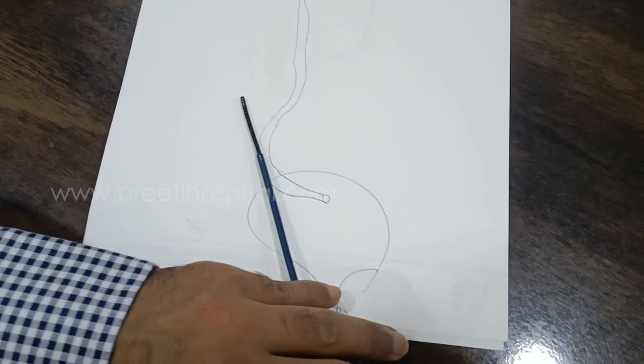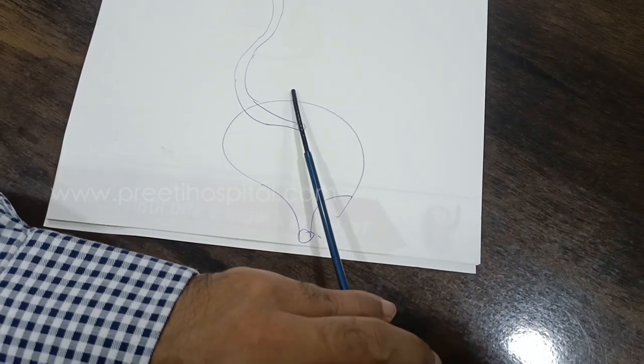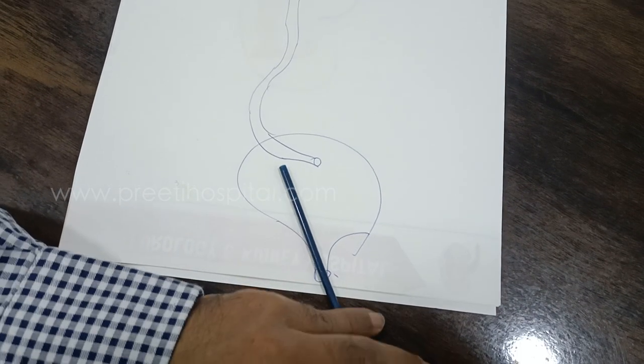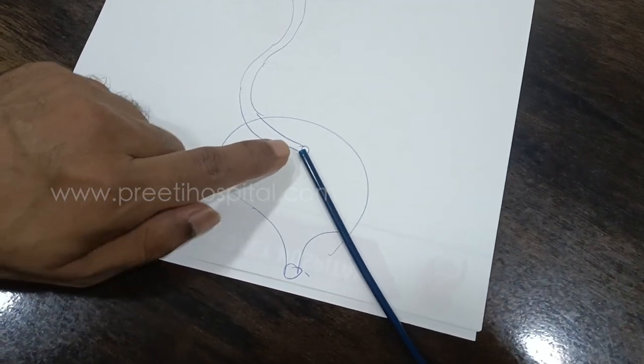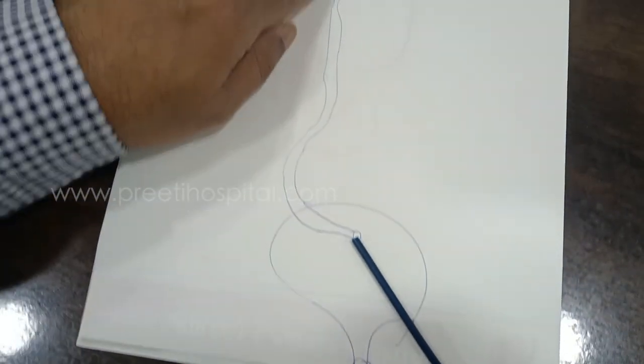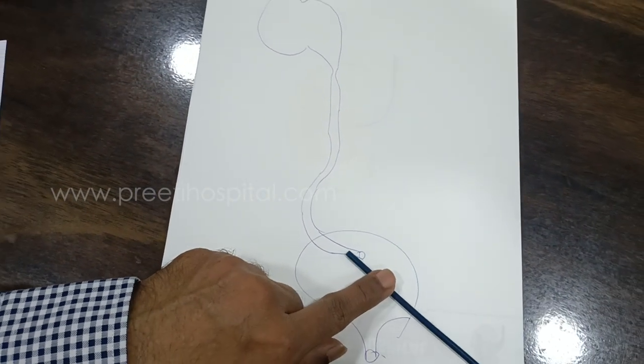Here we are sharing, this is the flexible scope coming like this. Normally, when you keep just at the entrance, whenever there is difficulty in passing the ureter, people try to do by just keeping here.